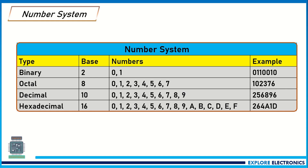If you look at the table here, we have all four number systems. The binary number system has a base of two. Why base two? Because we have only two different numbers in binary: 0 and 1. The next numbers are combinations of these two. So we have only two individual numbers, and with base 2 we represent binary.